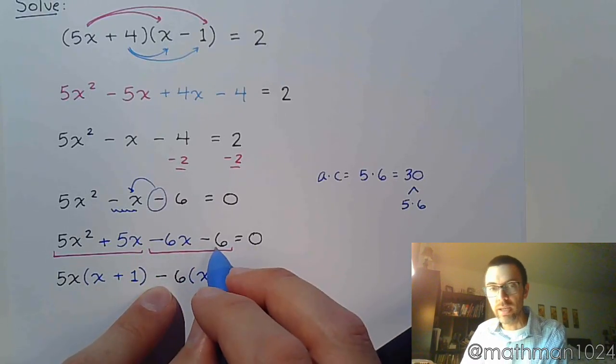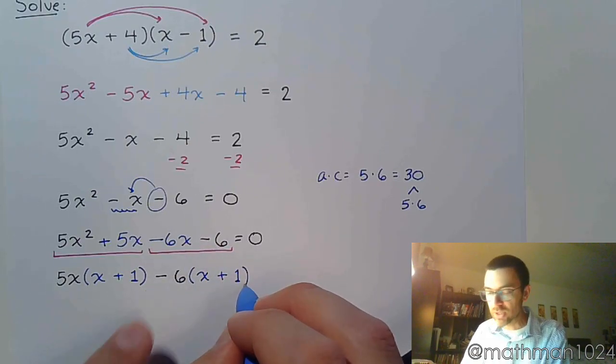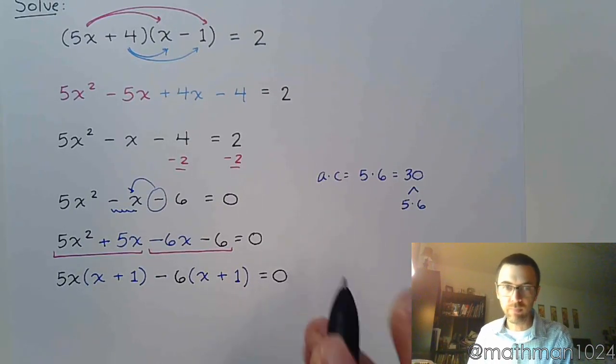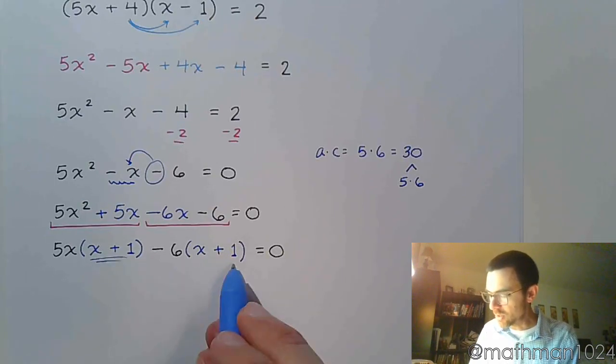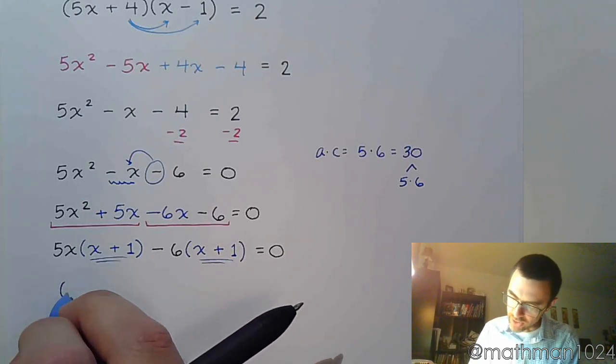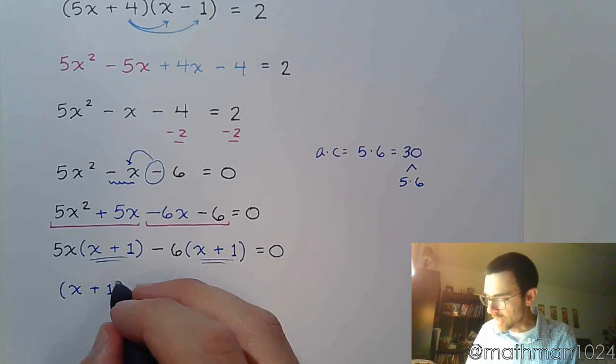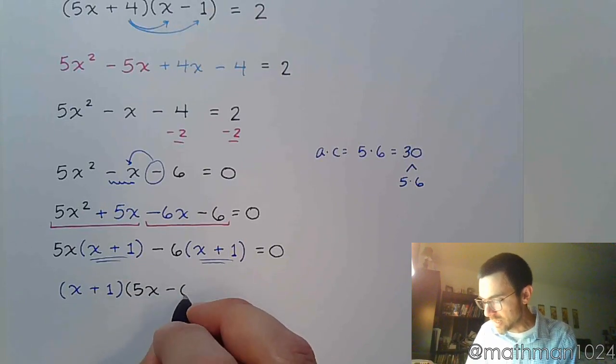Negative 6 divided by negative 6. Still just the 1. All right. So now we see that factoring by grouping can finish because you have that common factor of x plus 1. That x plus 1 was connected to the two pieces, 5x and negative 6.